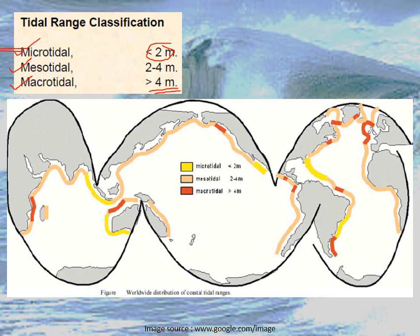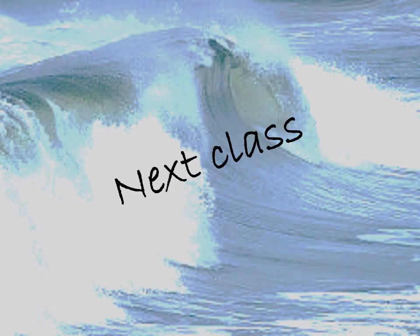That's all for today's class. I hope you understand the coastal processes — mainly waves and tides — and how they occur. In the next class we will continue with some other deep processes occurring in the coastal areas, and after that the landforms produced by these processes and how these different processes affect the coastal areas.